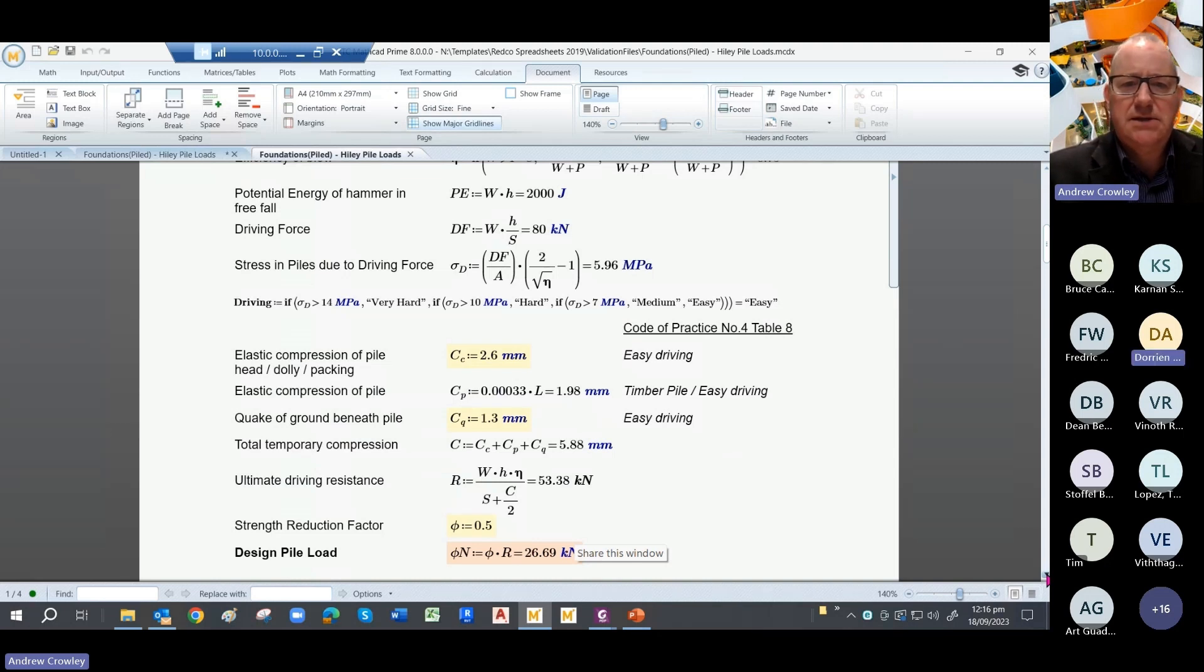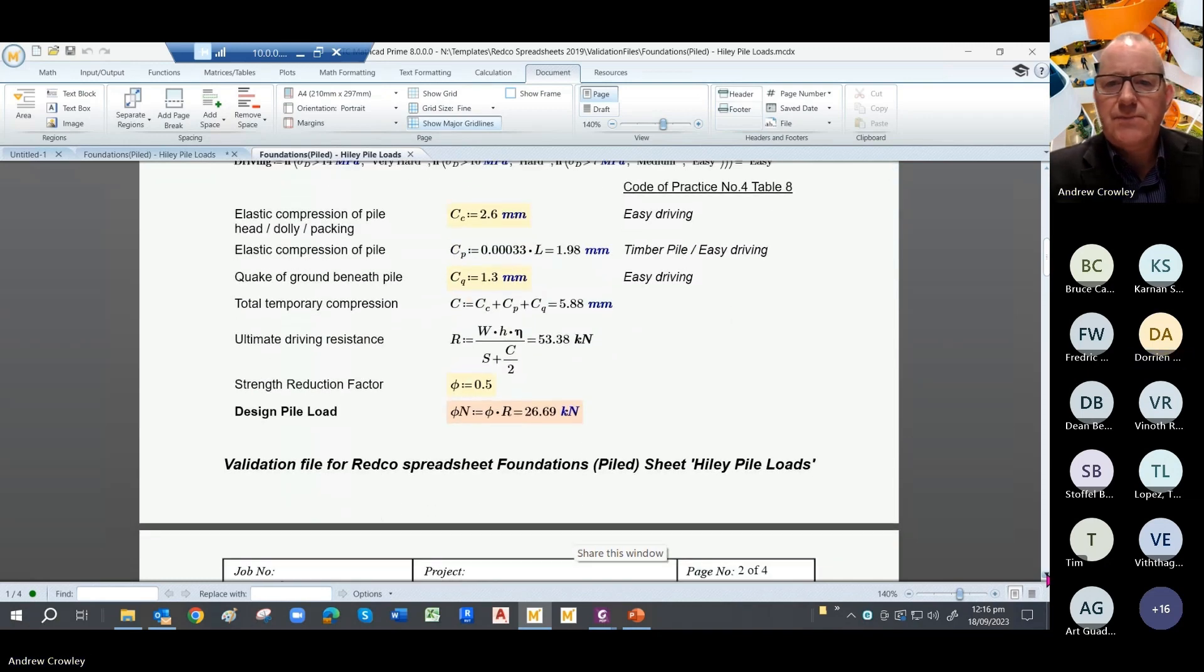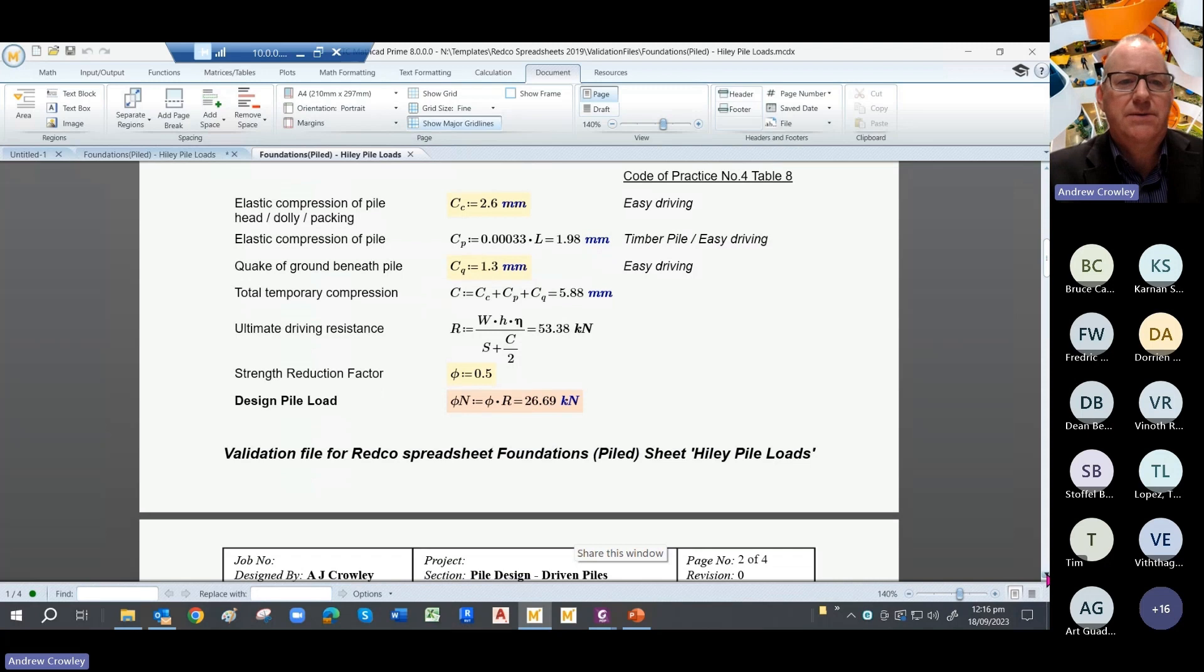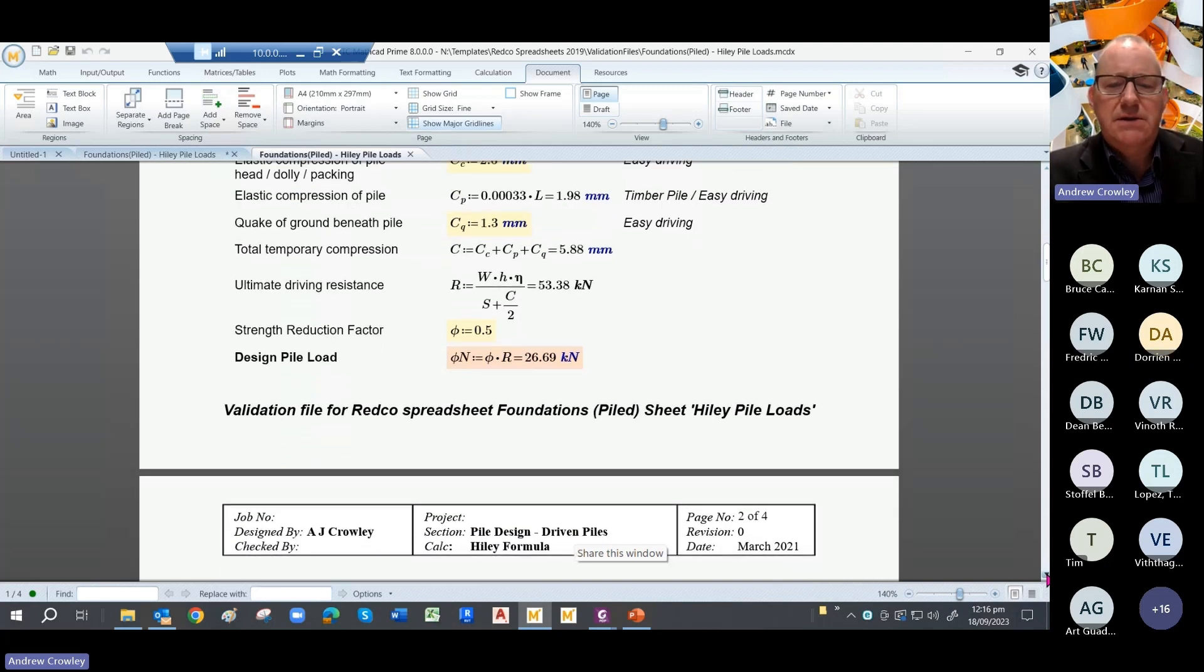And for the MathCAD geeks, yes, that's a nested if statement. So you're almost into programming with MathCAD there. From our tables in the code of practice, Table 8, you can get your C value, CC, for the compression of the pile. And there's compression of the pile, the head and the dolly and the packing. And the three values which you add together to get the 2.6 value I've got there. The elastic compression of the pile is also taken from that table to give you CP, which is related to the length of the pile. The quake again picked out in there is now just 1.3. So you add all those together to get a grand total of 5.88.